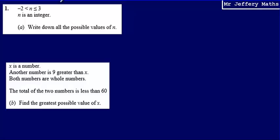This is question 1. Here we're told that n is an integer. Then we're told to write down all the possible values of n. And we're told that n is greater than negative 2 but less than or equal to 3.